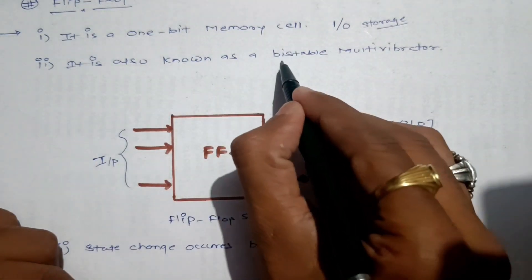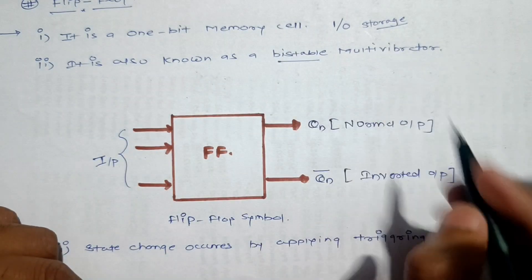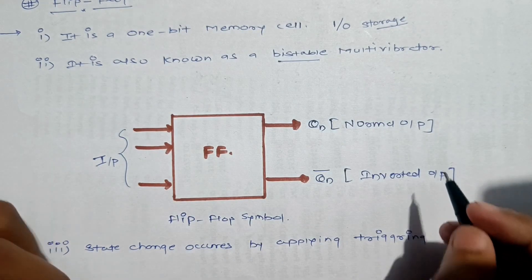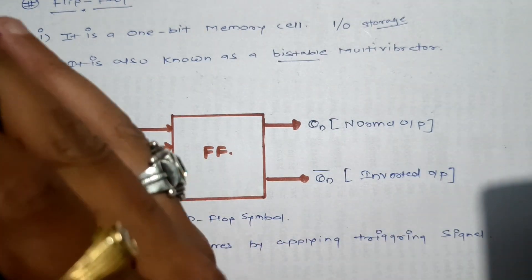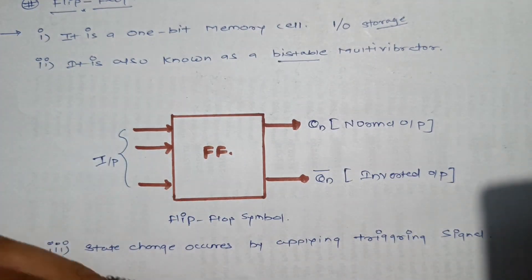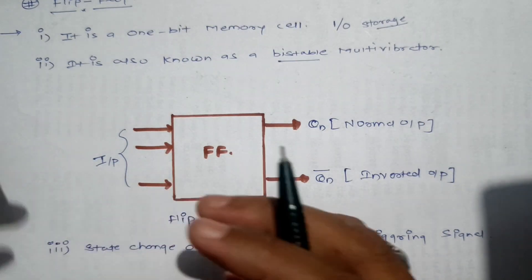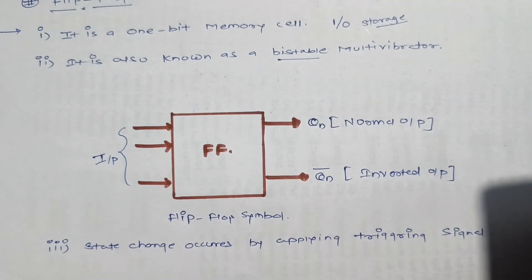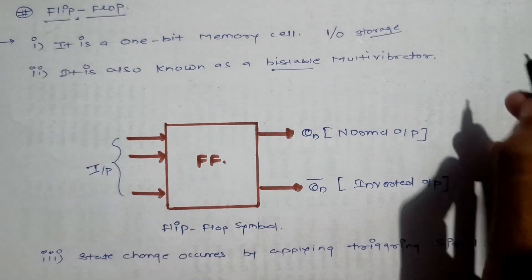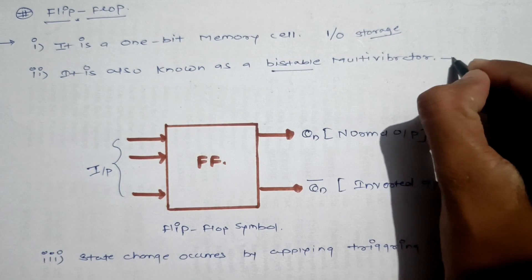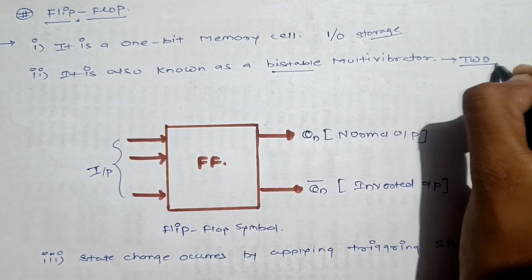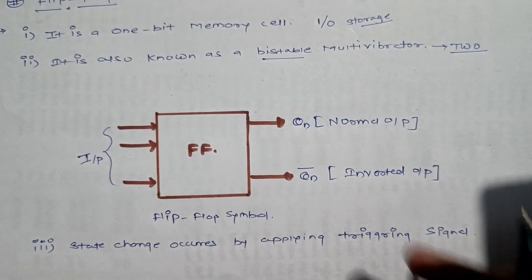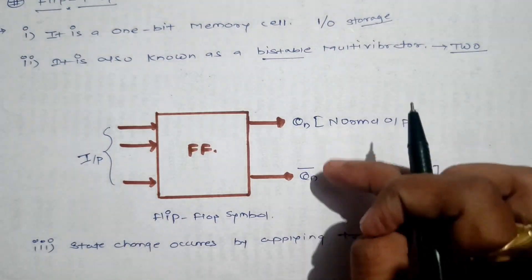Because it has two outputs, it is called a bistable multivibrator. A bistable multivibrator is a circuit which has two stable states. Similarly, we are getting two stable states as outputs: QN and QN bar.